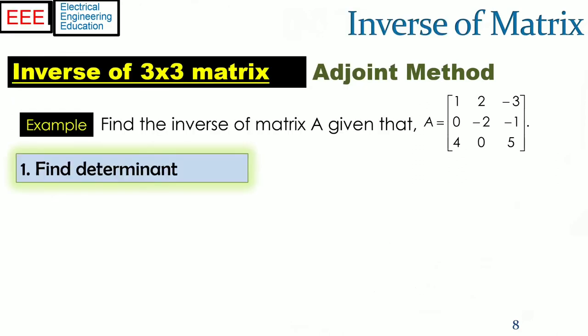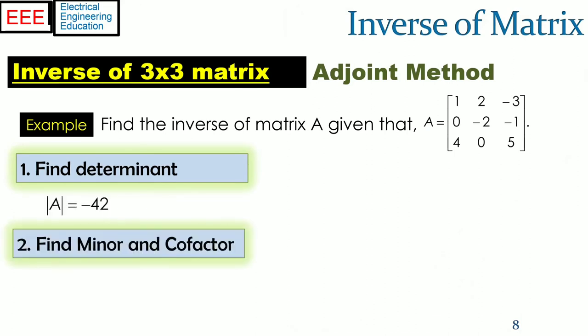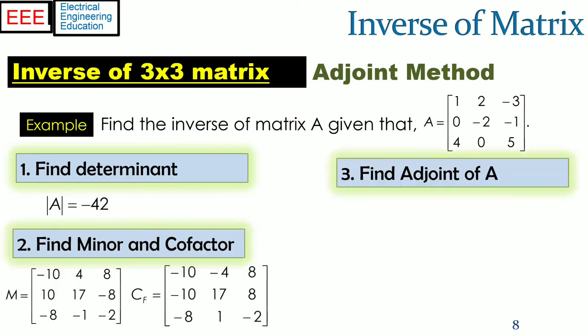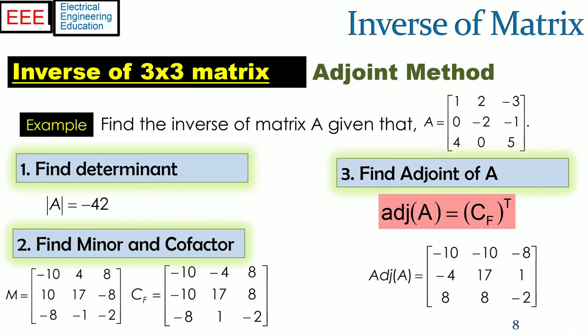As mentioned earlier, to find the inverse of higher order matrices, the steps are: 1, find determinant; 2, find the minor and cofactor matrices; 3, find the adjoint; and 4, find the inverse. In the previous slide, the first two steps were applied to find the minor and cofactor matrices entries.